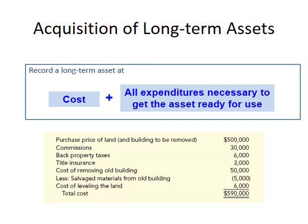When you purchase a long-term asset, the cost includes two parts: the purchase price paid, and all expenditures necessary to get the asset ready for use. Let's use land acquisition as an example. The purchase price is $500,000. Additional necessary expenditures include a commission fee of $30,000, back property taxes of $6,000, title insurance of $3,000, and a cost of $50,000 to remove an old building on the land.